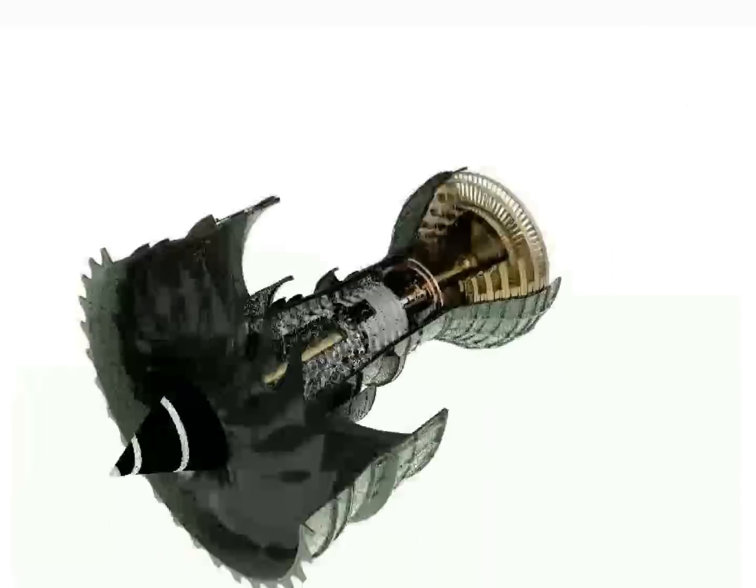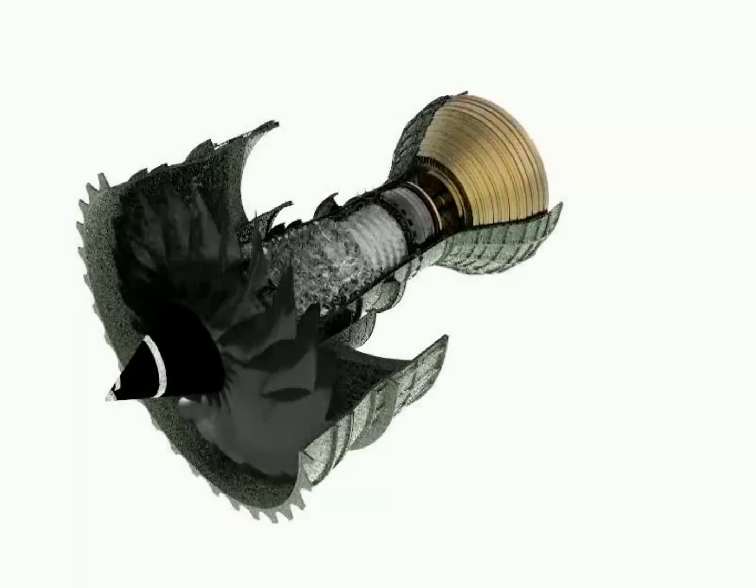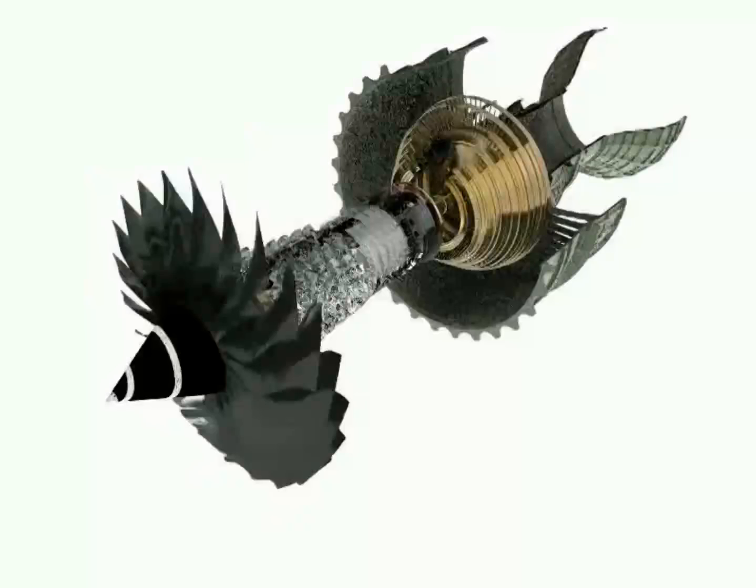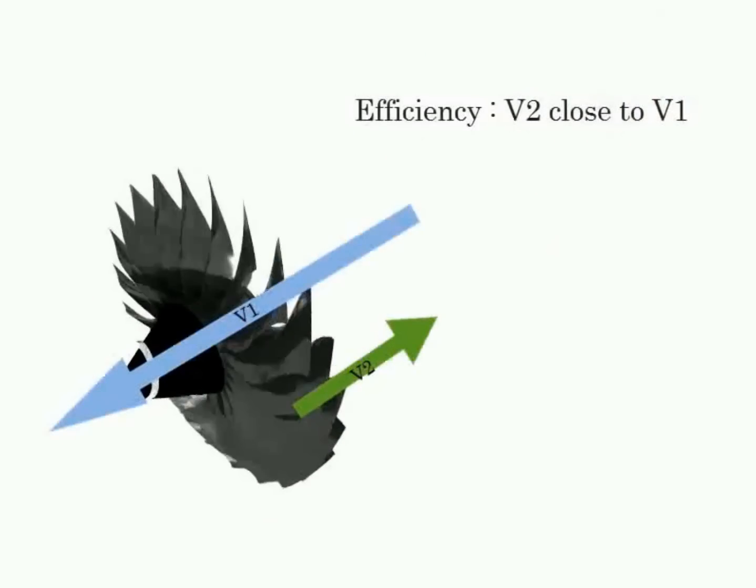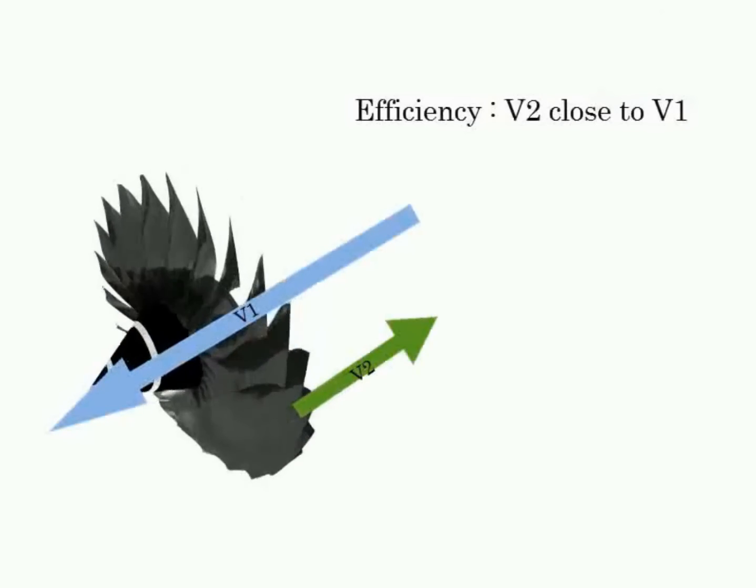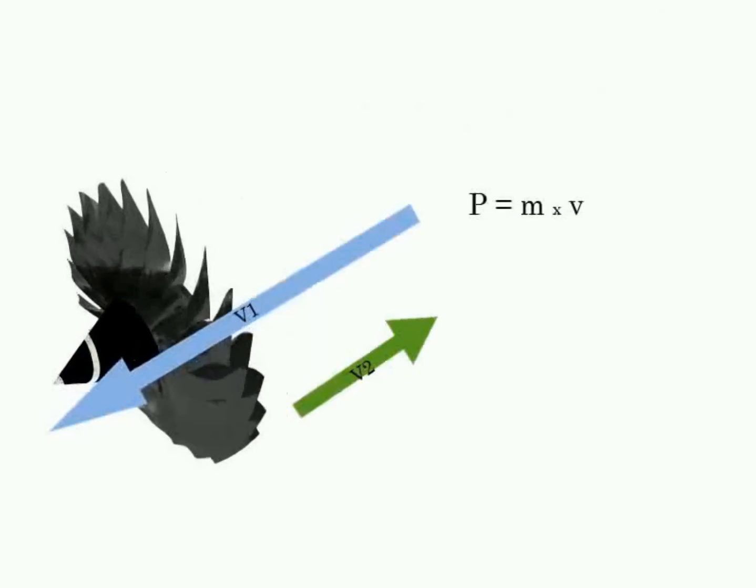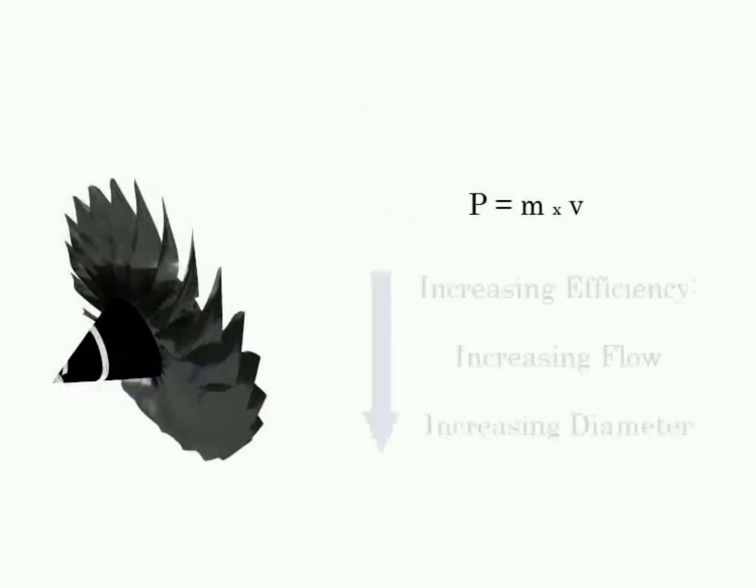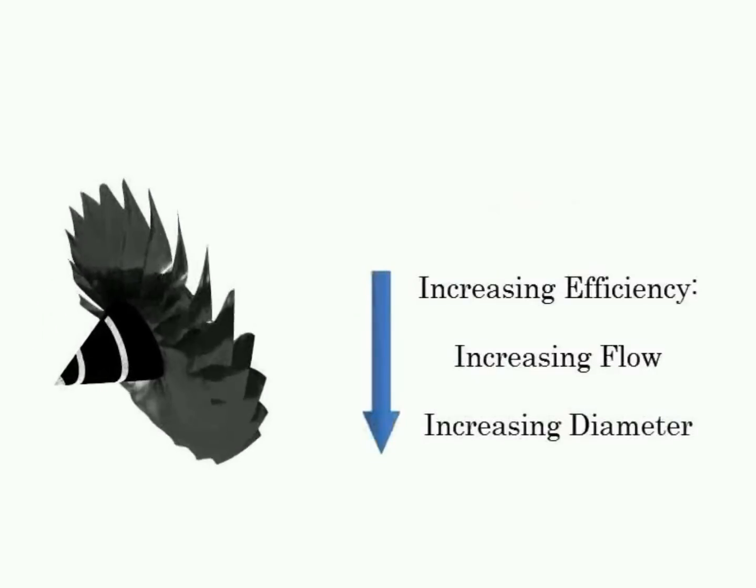Now, have a look at the fan efficiency in the case of the aircraft. Its efficiency is even higher when the output speed of the air is close to the speed of the aircraft. Considering conservation of linear momentum, movement quantity is equal to the product of the flow multiplied by speed. This means if you want to reduce the output air speed in order to increase efficiency, you have to increase the flow, thus the diameter of the fan.